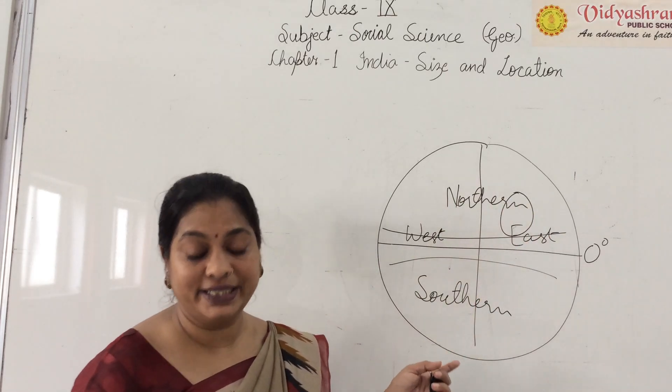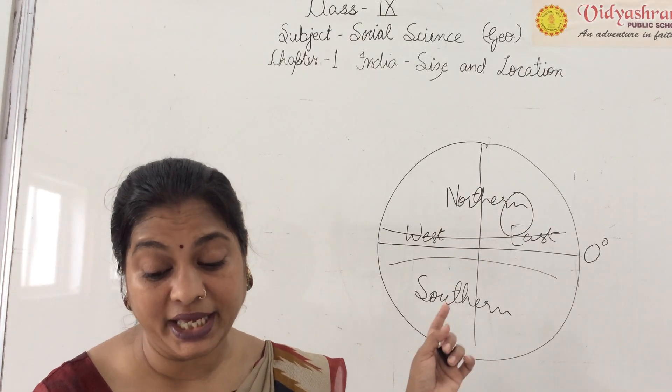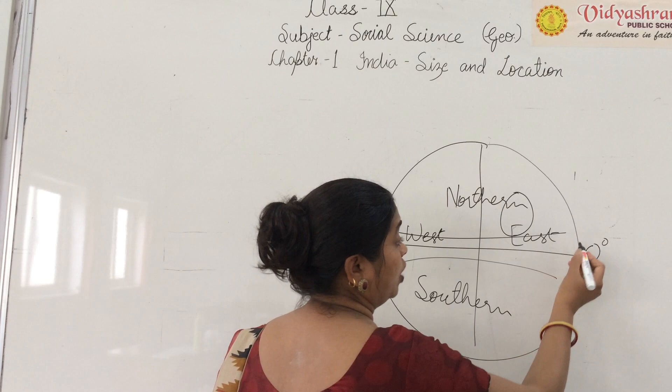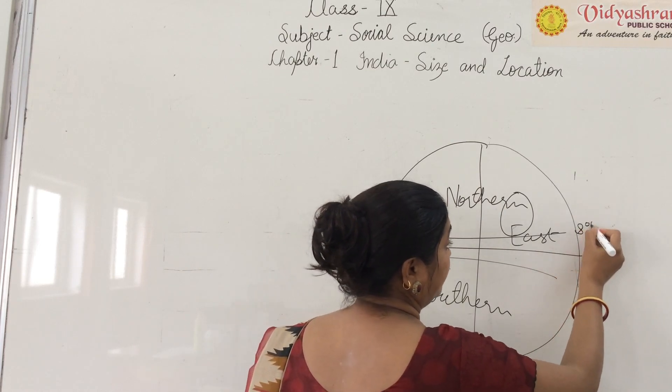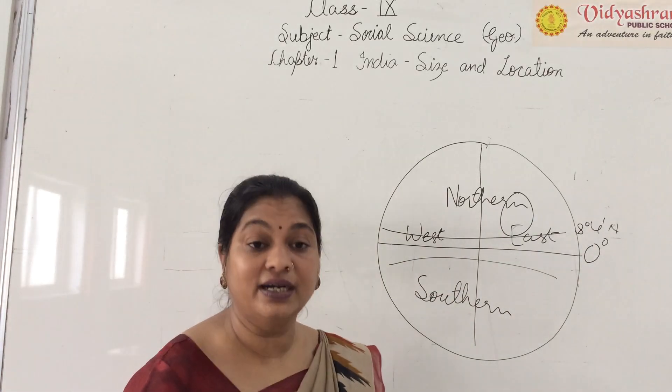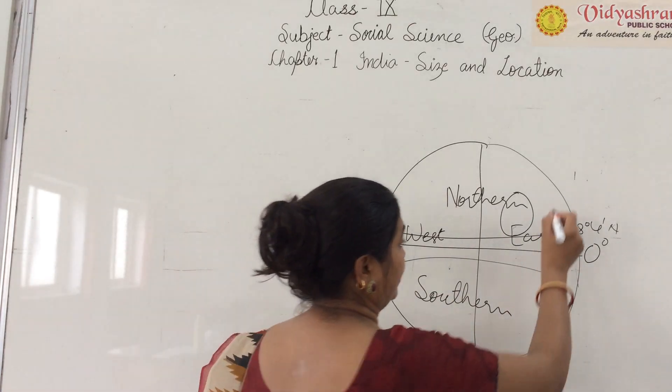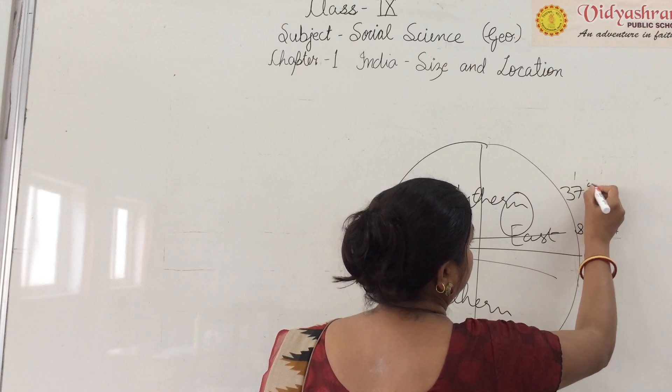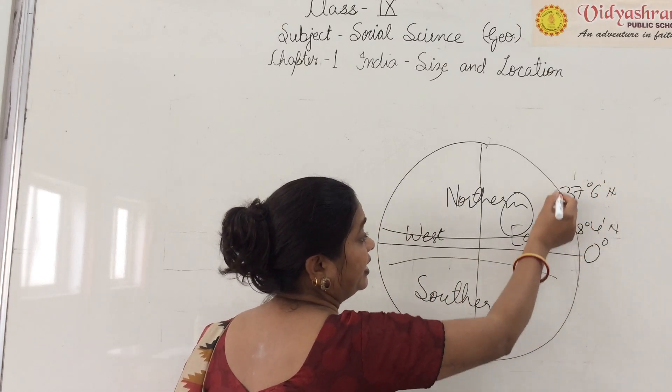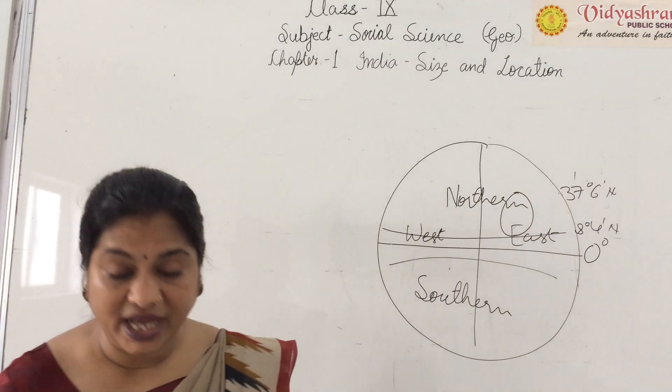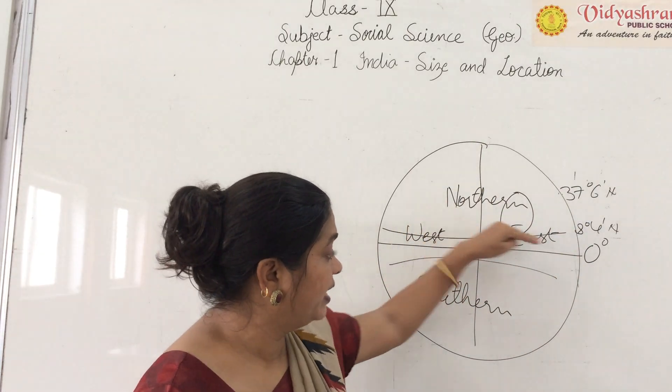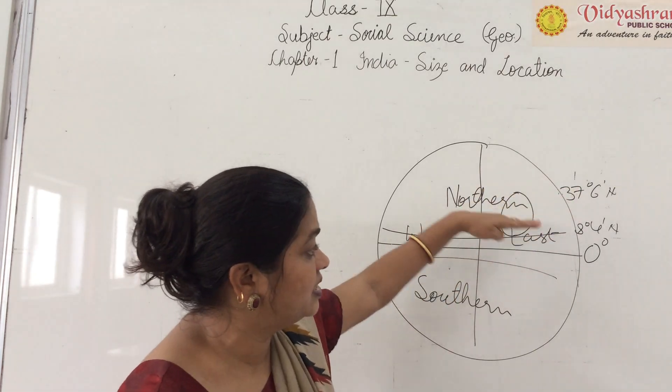We can see the latitudinal extent of India. It is 8 degrees 4 minutes north. India starts here and completes at 37 degrees 6 minutes north. So here we can see India's length. This is our latitudinal extent.